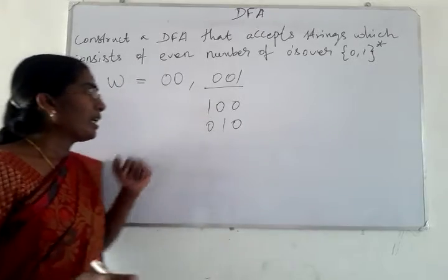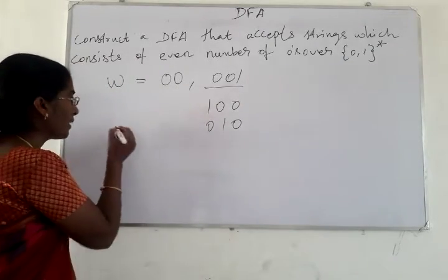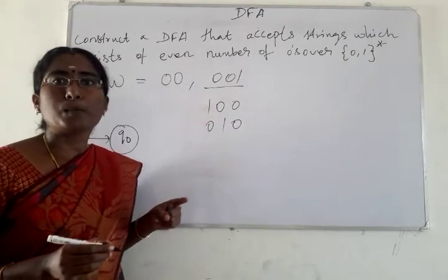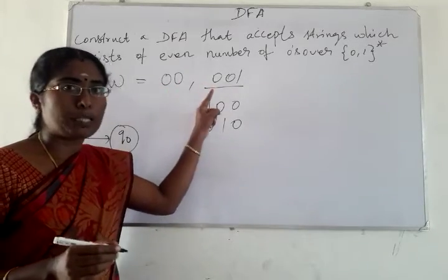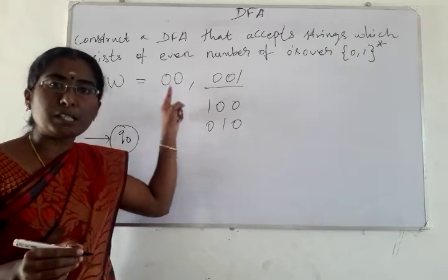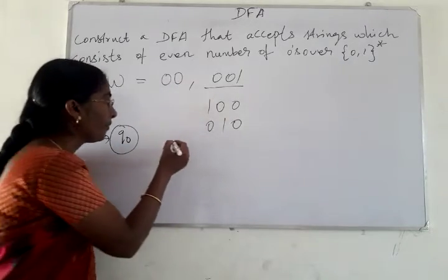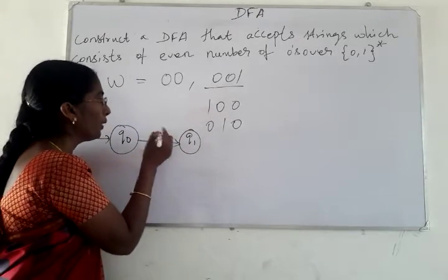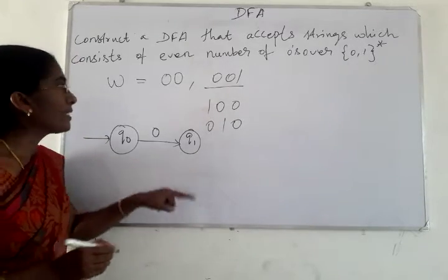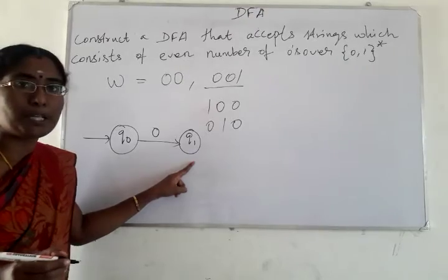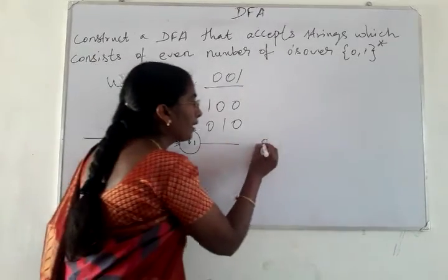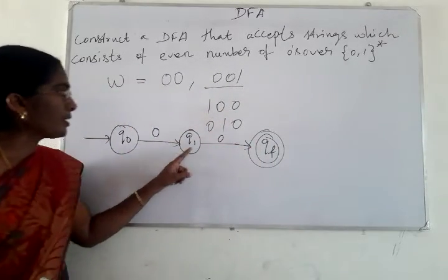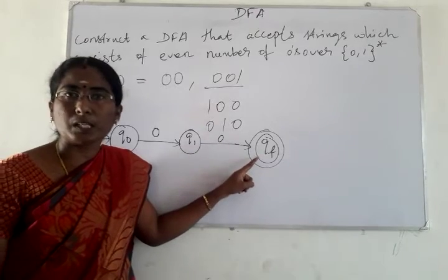How do we construct a DFA? Assign Q0 as the start state. Our minimum input symbol is '00'. We first make a transition for the first zero from the start state Q0 to one intermediate state Q1. Then for the next zero, we make a transition from the intermediate state Q1 to the final state QF.